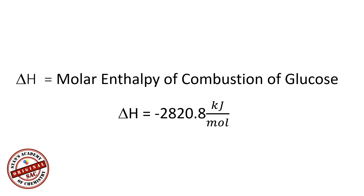That is how you solve a question based on a bomb calorimeter. Problems can be modified to ask for different values present in the equations — for example, calculating the heat capacity of the calorimeter, the specific heat of a substance, or what the initial or final temperature would be if given molar enthalpies. Those are some of the variations you would notice in problems related to bomb calorimeters.